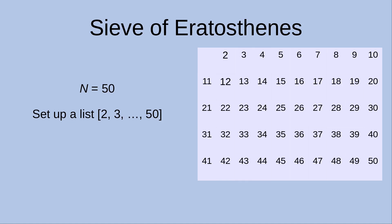Now let us see an example of the sieve of Eratosthenes. Suppose I want to find out the prime numbers that are below 50. So I set n to be 50, and then I set up a list that contains 2, 3, 4, up to 50.